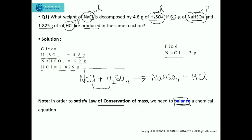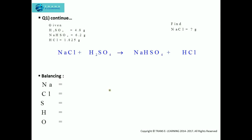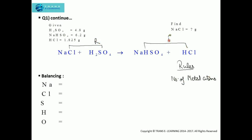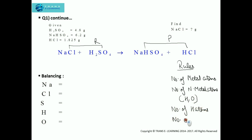So we will move step by step. First, let's see whether this equation is balanced or not. For balancing a particular equation there are some rules we need to follow. First, we need to balance the number of metal atoms on both the reactant and the product side. Then we balance the number of non-metal atoms other than hydrogen and oxygen. Then we balance the number of hydrogen atoms, and at last we balance the number of oxygen atoms if required.